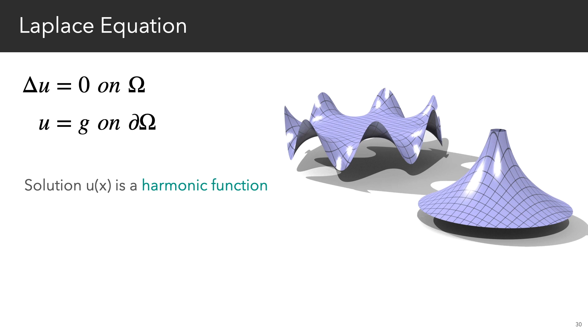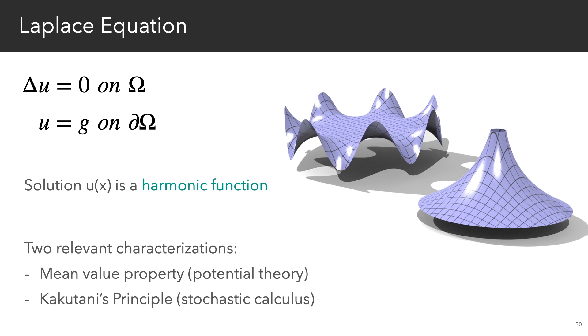The solution to this equation is known as a harmonic function. And essentially, these functions smoothly interpolate g into the interior. We'll consider two equivalent characterizations of harmonic functions, derived using the complementary viewpoints of potential theory and stochastic calculus, to motivate the basic algorithm we use here.